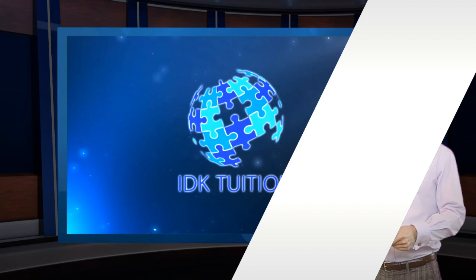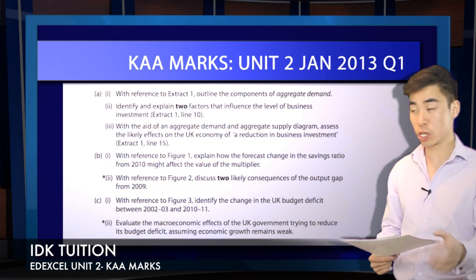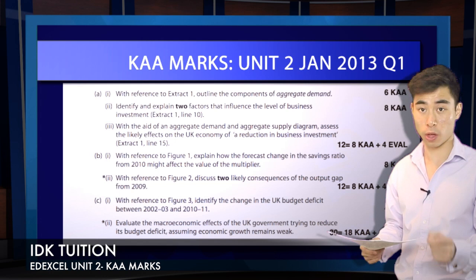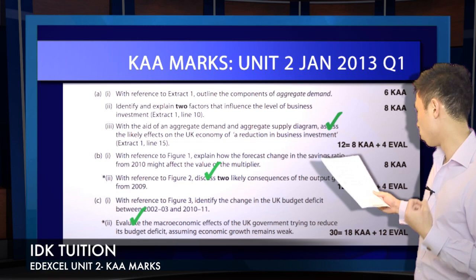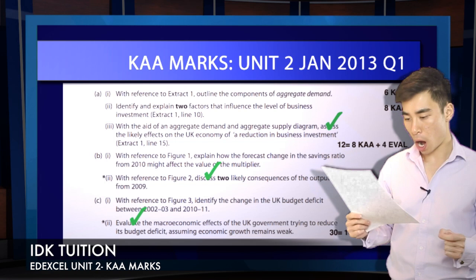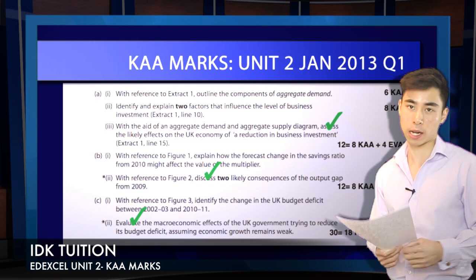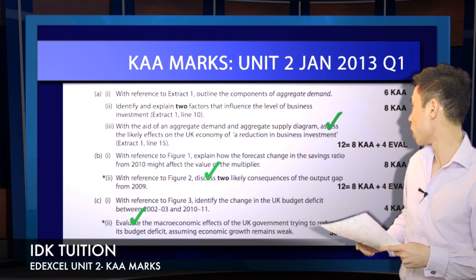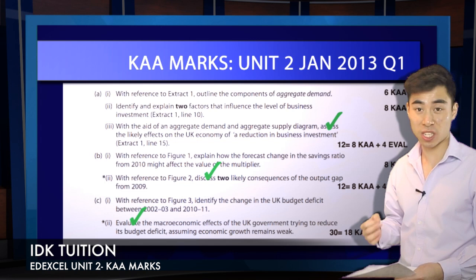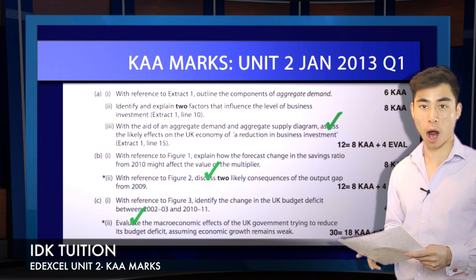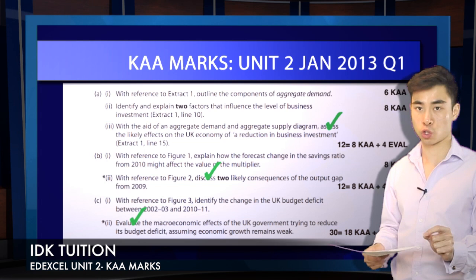We're going to look at January 2013, question number one. Remember there's no multiple choice in unit two, unlike unit one. In terms of evaluation questions, remember you're looking for those keywords. Question A(i) has the word 'assess' — that's an evaluation question. Question B(ii) has 'discuss' — another evaluation question. Question C is your monster 30-marker, obviously an evaluation question. In terms of KAA-evaluation splits, just remember there's always going to be less than half the total marks available for the evaluation component.